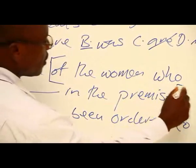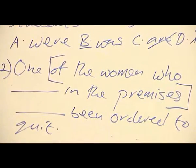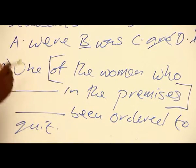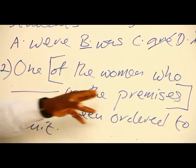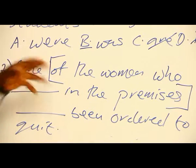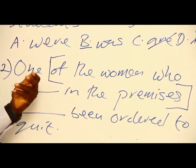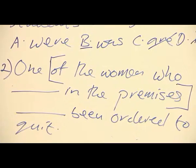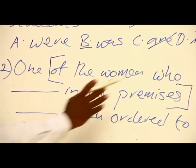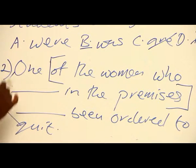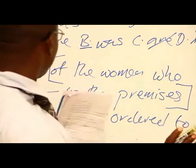So 'of the women who dashed in the premises' is actually a prepositional phrase operating as an adjectival phrase, telling us which one — is it 'one of the women dashed in the premises' or 'one of the men dashed in the premises'? So you can see that 'one' is being described, modified, or qualified here.